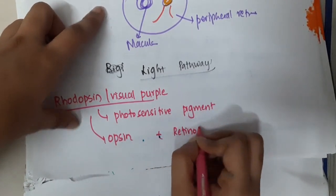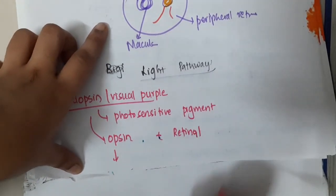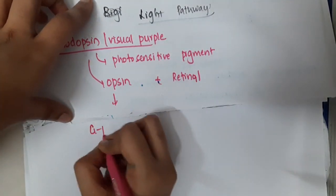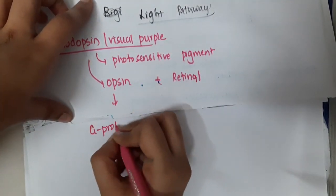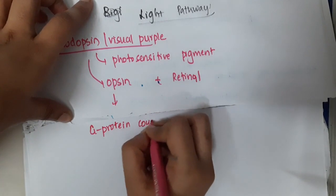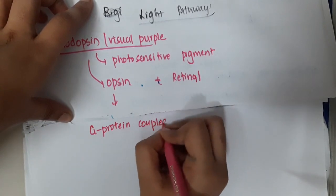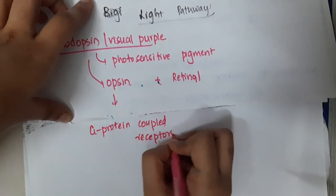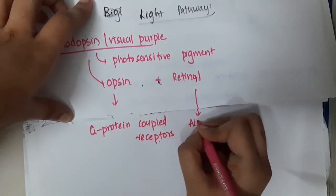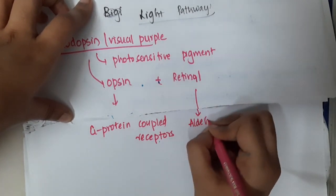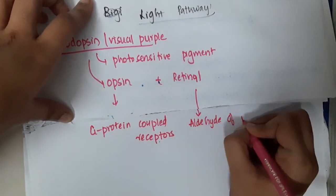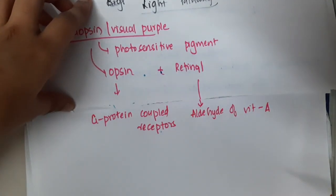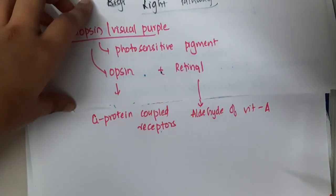Opsin is a protein belonging to the G-protein coupled receptor family. Retinal is the aldehyde of vitamin A.